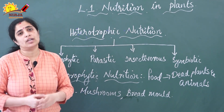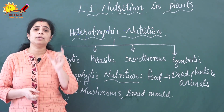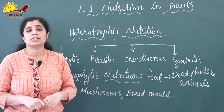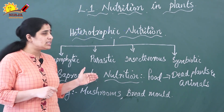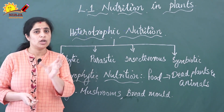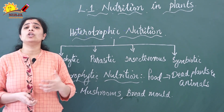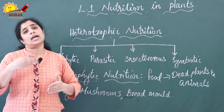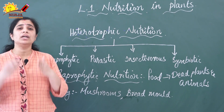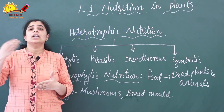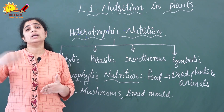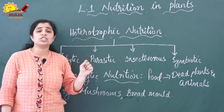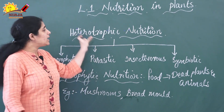In the last video I discussed photosynthesis. Photosynthesis occurs in green plants because a green-colored pigment, chlorophyll, is present in them. Some plants don't have chlorophyll, so they can't conduct photosynthesis. These plants, along with other living organisms such as human beings and animals, depend on green plants for their food. These organisms are known as heterotrophs, and this mode of nutrition is known as heterotrophic nutrition.